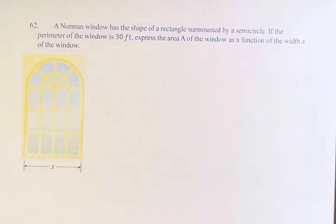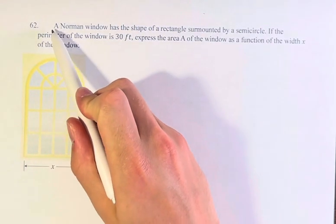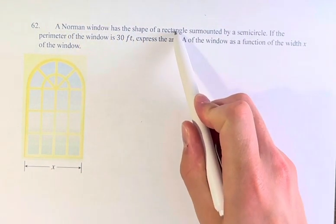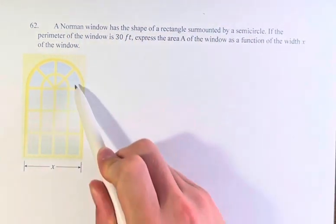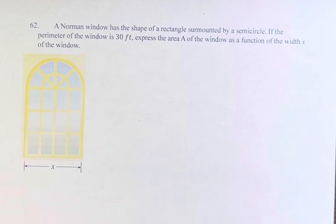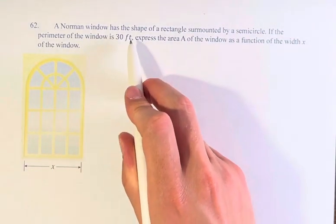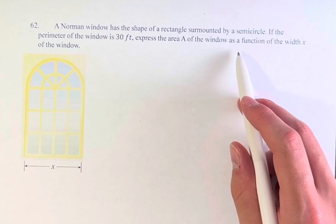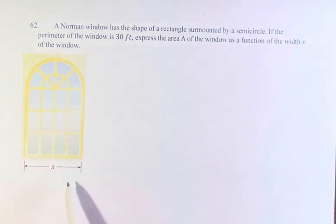Hello, and welcome back to another video. In this problem, we have a Norman window that has the shape of a rectangle surmounted by a semicircle. Demonstrated by this diagram here, we're asked if the perimeter of the window is 30 feet, express the area A of the window as a function of the width x of the window.